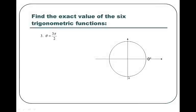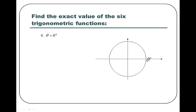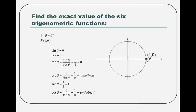For 3 pi over 2, which is 270 degrees, the coordinate is 0, negative 1. Therefore cosine is 0 and sine is negative 1. We have another undefined term at tangent because we have negative 1 divided by 0. The reciprocal of 0 is undefined. Now back at 0 degrees — that's the point 1, 0. Cosine is 1, sine is 0, and tangent is 0. The reciprocal of 0 is undefined, the reciprocal of 1 is 1, and the reciprocal of 0 is undefined.